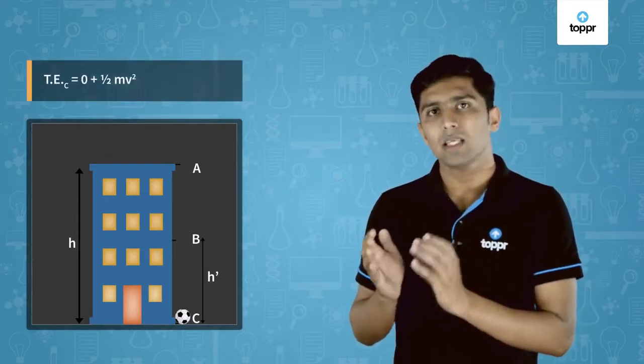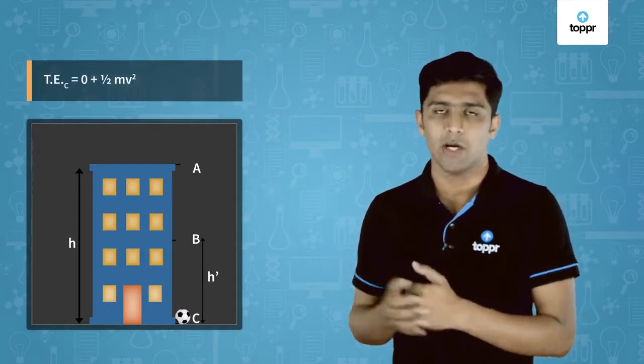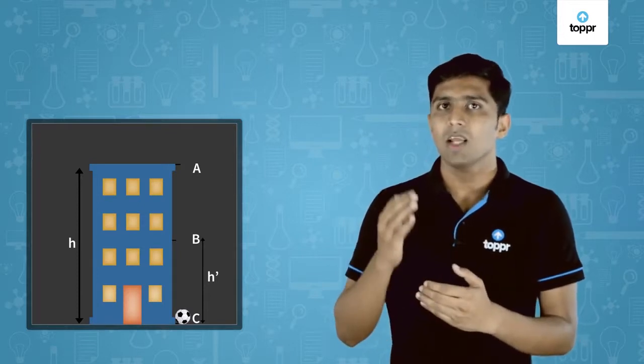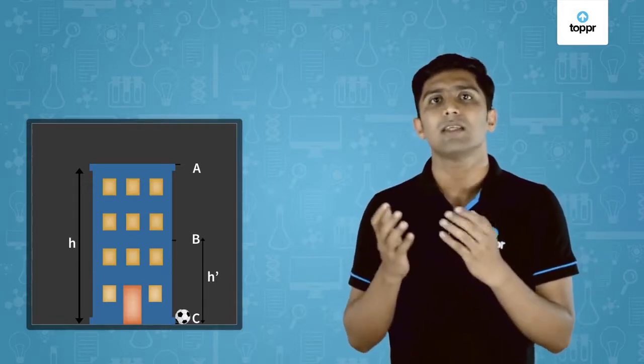Now let's consider a point just before the ball hits the ground — let's name that point C. At point C, the potential energy is 0 because the height is equal to 0. The velocity is maximum, so the kinetic energy is at its maximum. So the total energy at point C will be 0 plus half MV squared. Considering our three points — A, B, and C — the total energy remains the same.